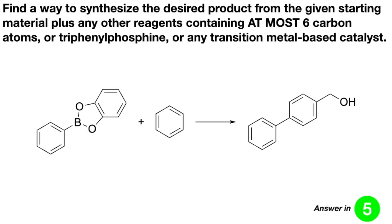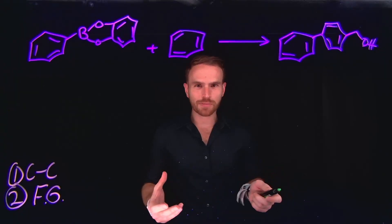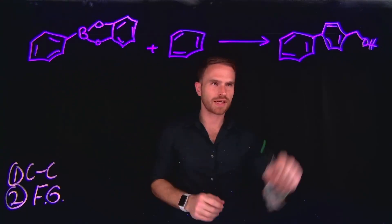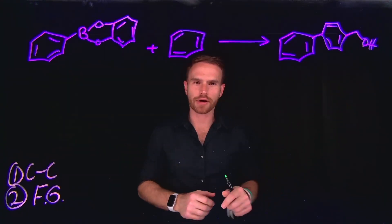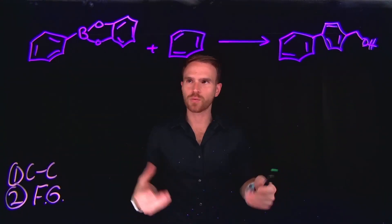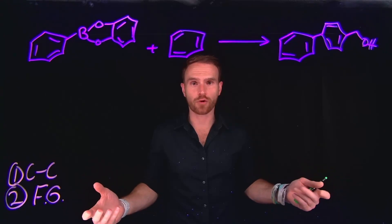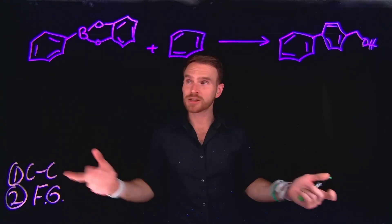Let's try one last problem using material learned in organic chemistry 2. Pause the video, try this problem independently, then resume the video to check your understanding. For the last problem, we are tasked with turning two different groups into a single product, and notably we are going to need to add several different carbon-carbon bond forming reactions.